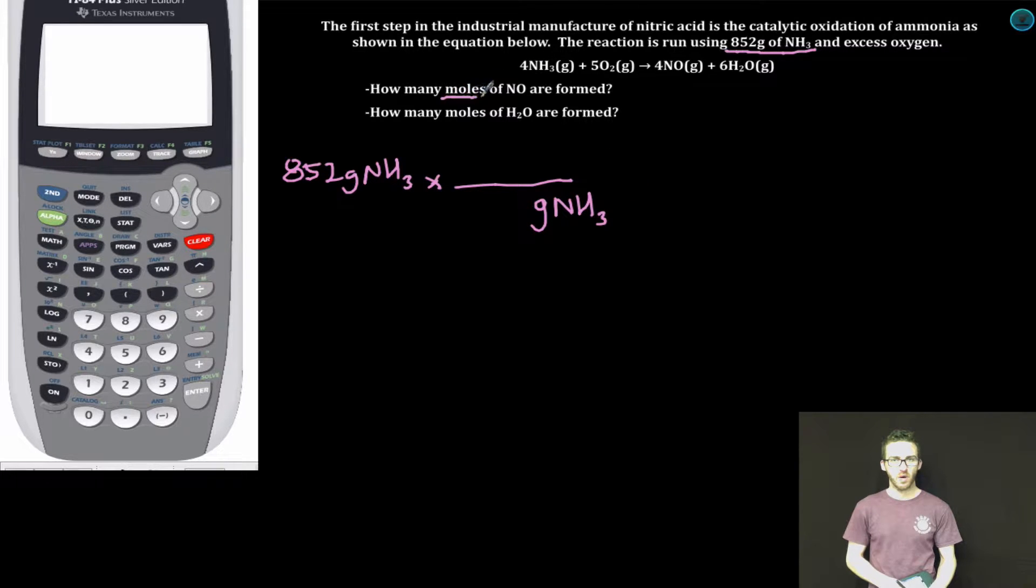I'm trying to get to moles of NO and it's tempting to do this, but you would be wrong. Recognize that the relationship between ammonia and NO in the balanced chemical equation is a relationship of moles, not grams of one thing to moles of something else. It's moles of ammonia to moles of NO. So my first step is to convert to moles of ammonia, moles of that thing I'm starting with.